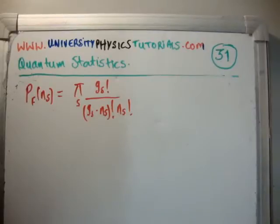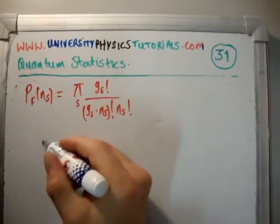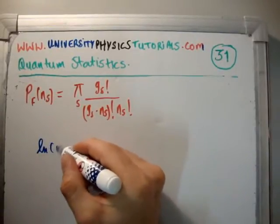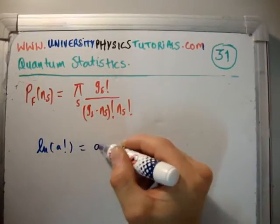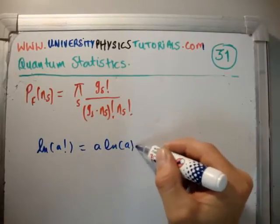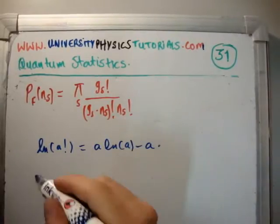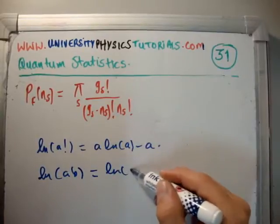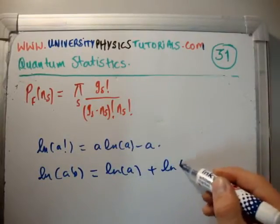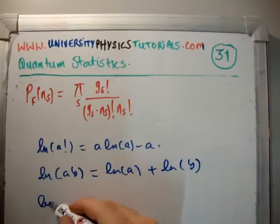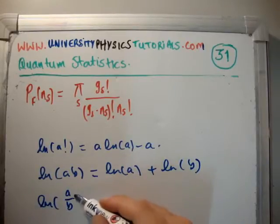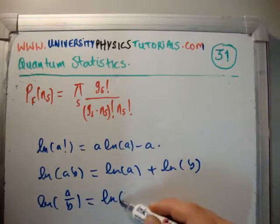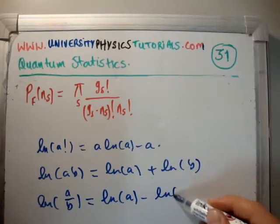Before I maximize the function, we need to make it look a bit better. Stirling's approximation says the natural logarithm of a factorial is equal to a times the natural logarithm of a minus a. We also know that the logarithm of ab equals log a plus log b, and the natural logarithm of a over b equals the natural logarithm of a minus the natural logarithm of b.